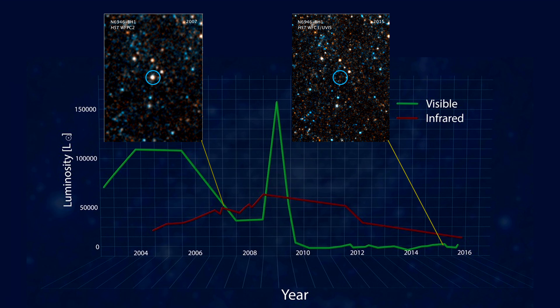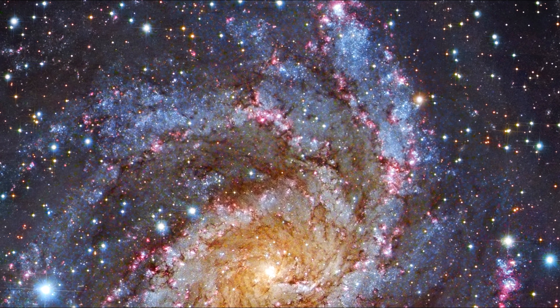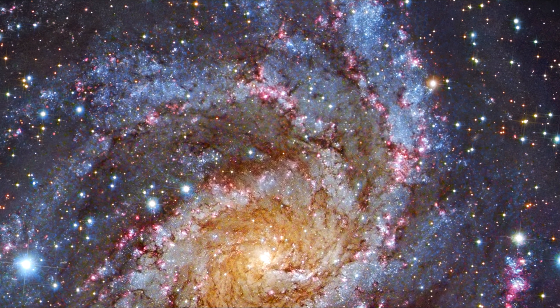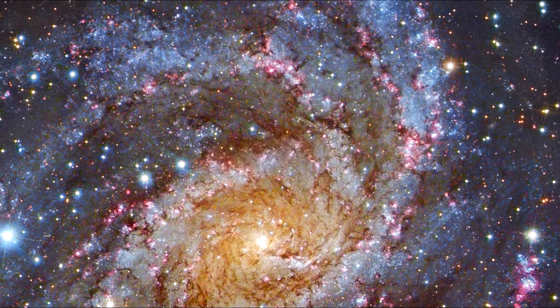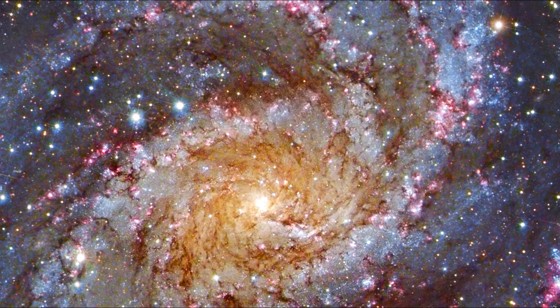The researchers eventually concluded that the star must have become a black hole without a supernova. It has been estimated that up to 30% of all massive stars form black holes this way, with the remaining 70% taking the supernova path.